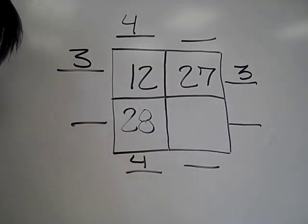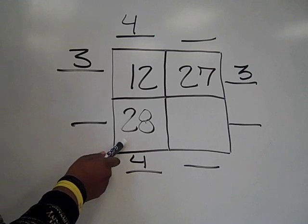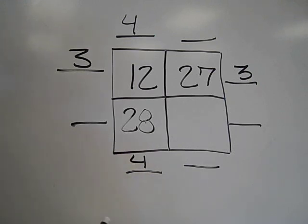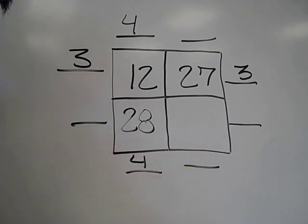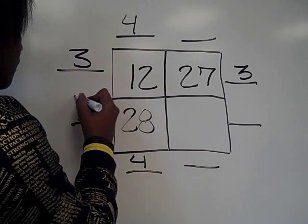We know that twenty-eight is in the fours column, so we can ask, four times what is twenty-eight? Seven. The twenty-eight and the unknown product must be in the sevens row. Write seven on the right and left of this row.